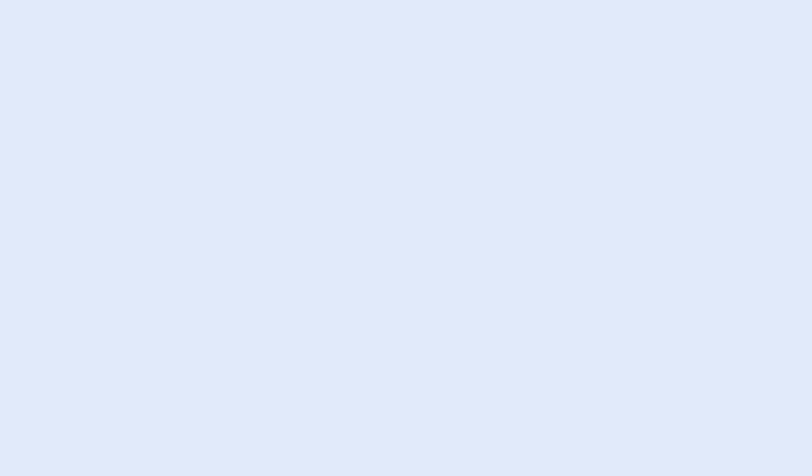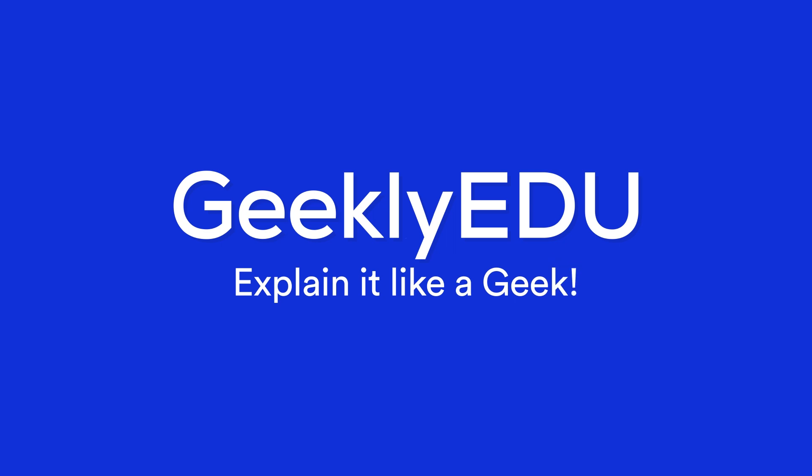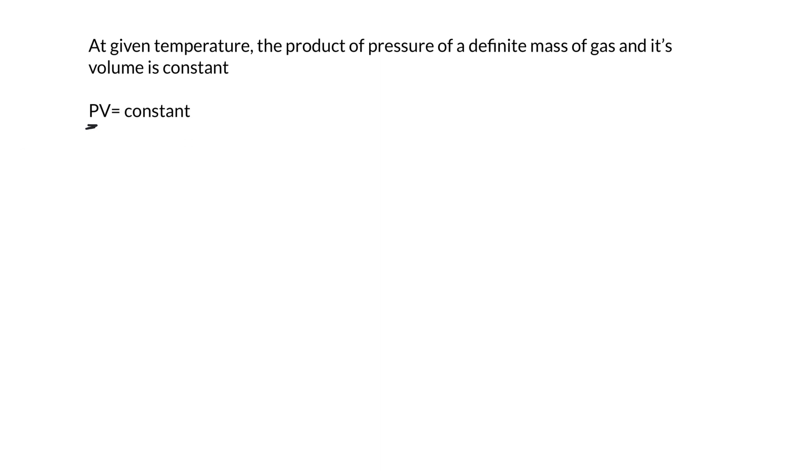The first gas law was given by Boyle. At given temperature, the product of pressure of a definite mass of gas and its volume is constant. So you can say PV is equal to k. If you draw a graph with pressure on the x-axis and volume on the y-axis, as the pressure increases, the volume decreases.